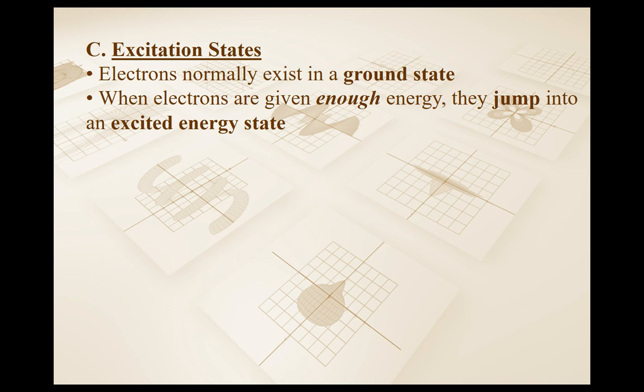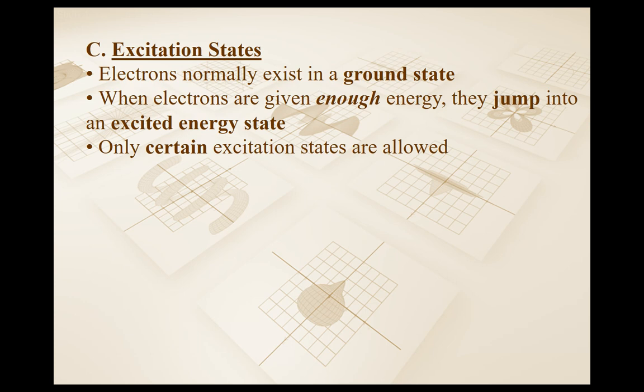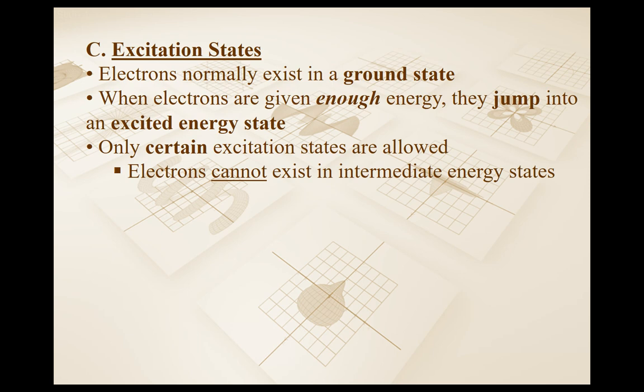When you give electrons in the mercury enough energy, they actually jump into an excited energy state. However, there are only certain excitation states that are going to be allowed, and electrons cannot exist in intermediate states — they can't exist between them. We need to visualize this somehow because this is getting really complicated very fast.